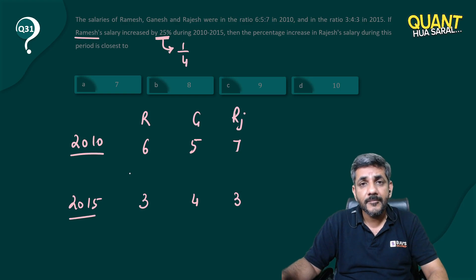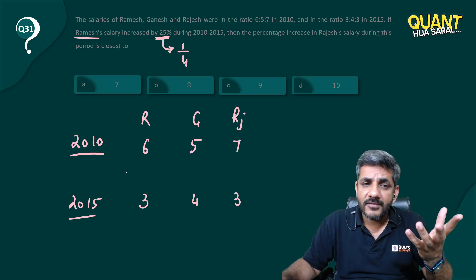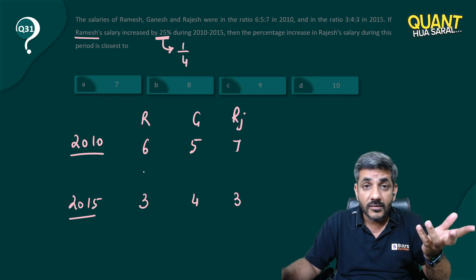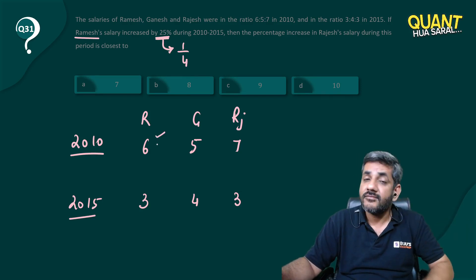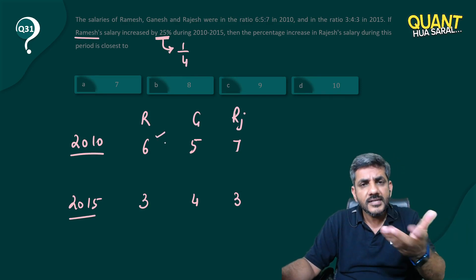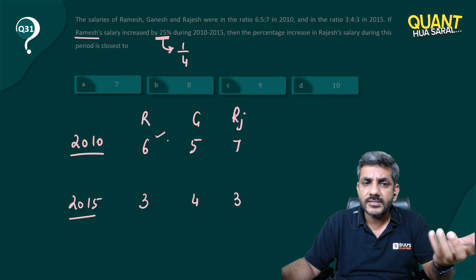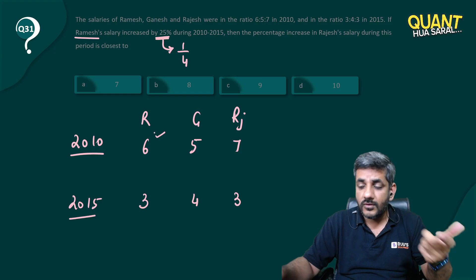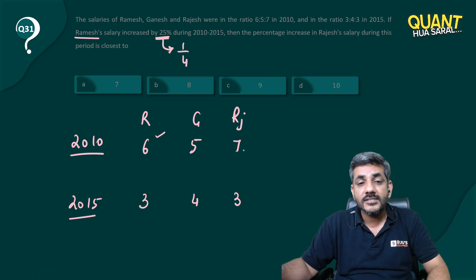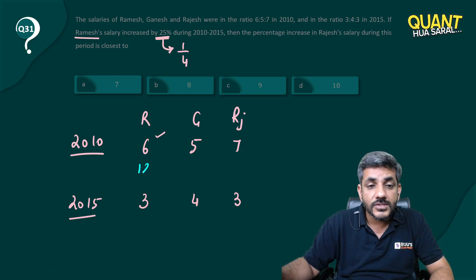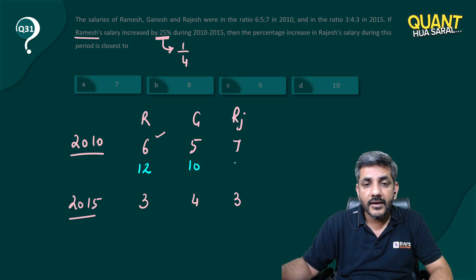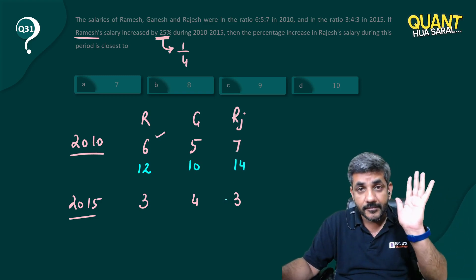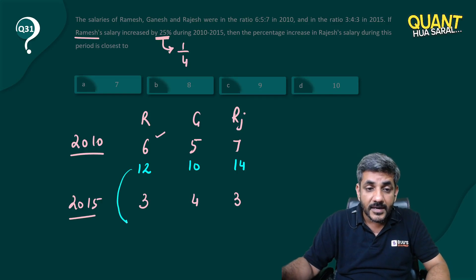If a number has increased by 1/4, I always want that number to be a multiple of 4. But Ramesh's salary is 6 here, which is not a multiple of 4. So let's make it a multiple of 4 by doubling it — double of 6 is 12, which is a multiple of 4. So I'm going to multiply this ratio by 2, making the numbers 12, 10, and 14.